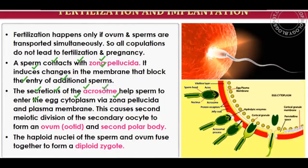The acrosomal region of the sperm reaches the cytoplasm of the ovum via the zona pellucida and plasma membrane. This causes the second meiotic division of the secondary oocyte to form an ovum and a second polar body.